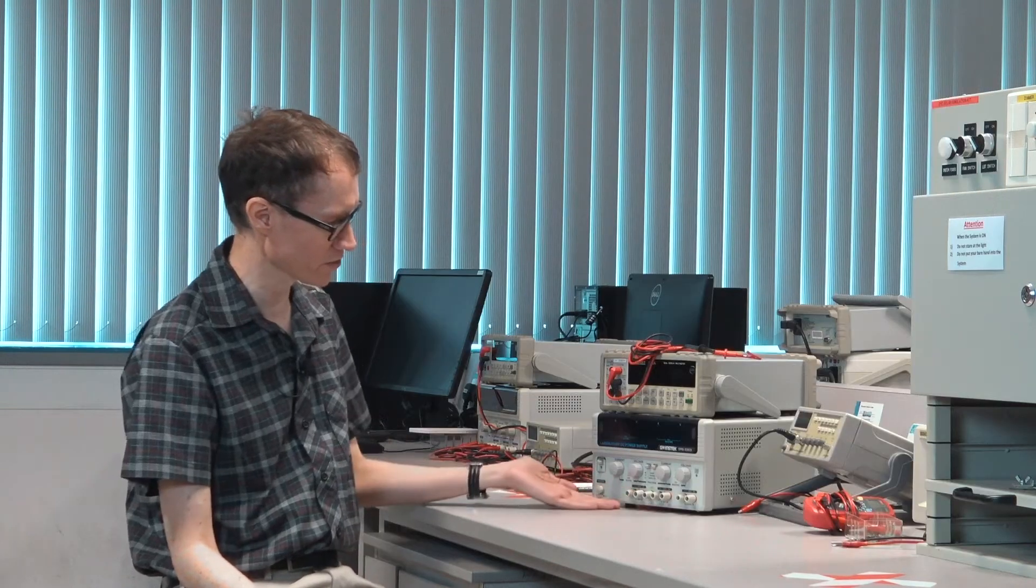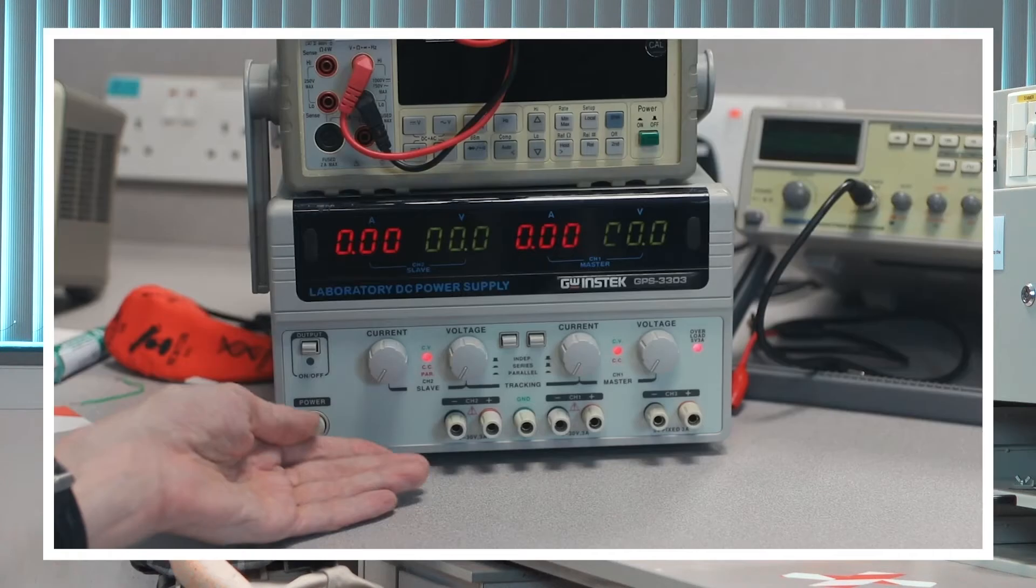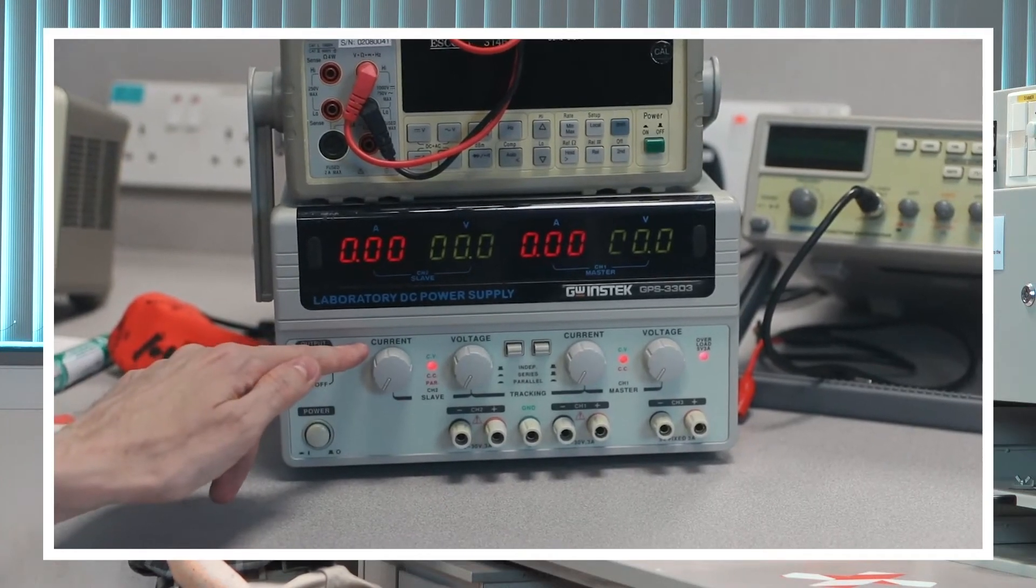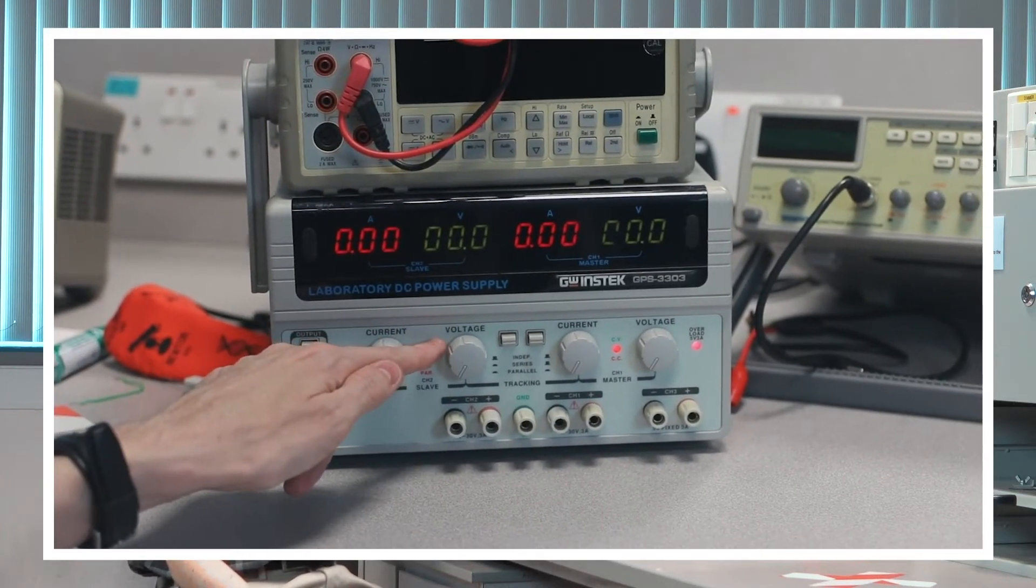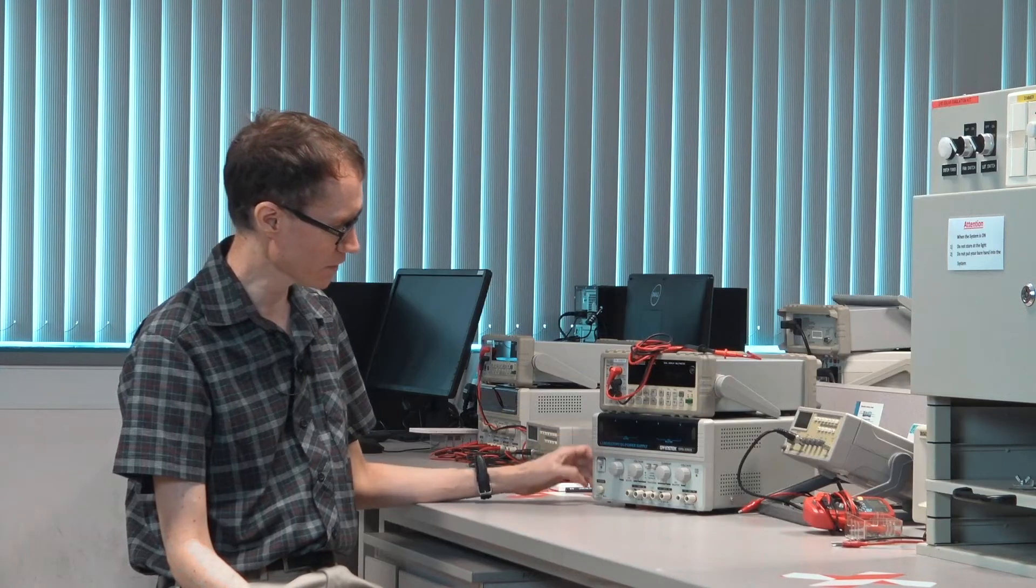They have different colors, and the machine also has several knobs. Some of the knobs are labeled current, and some of the knobs are labeled voltage. Let's go ahead and turn this one on.